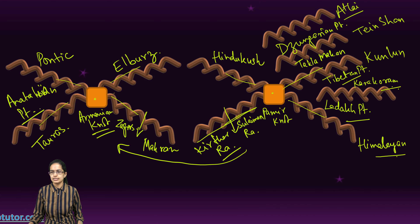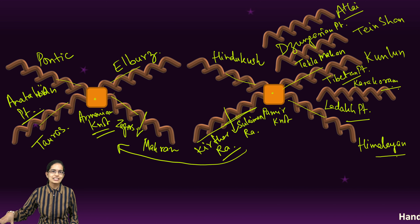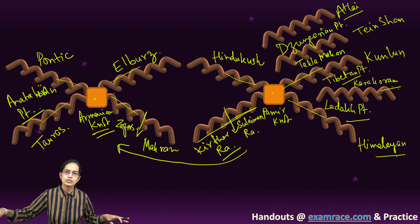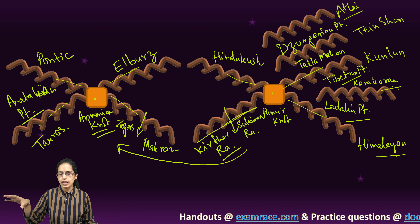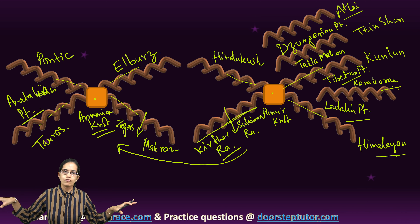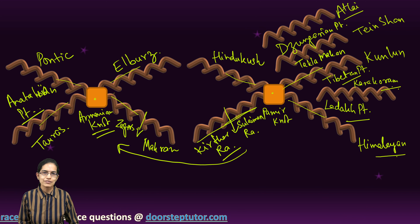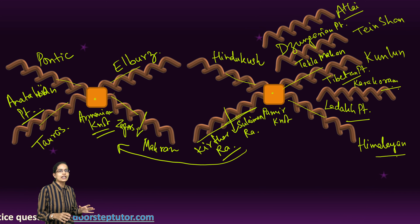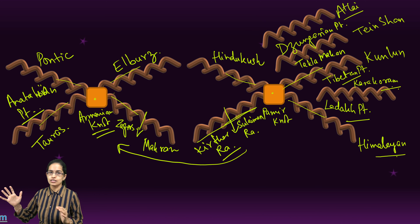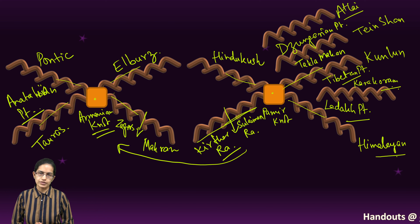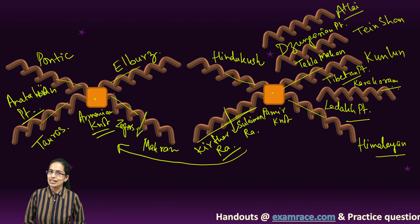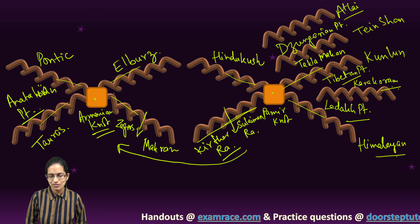So these are the major mountain ranges north of India. In continuation, you have two major knots — the Pamir knot and the Armenian knot — and the mountains originating from these regions are explained. This is a quick way to understand the major Himalayan mountain ranges and their continuation towards the west. We'll be continuing with many such interesting lectures in upcoming classes. Stay tuned and have a wonderful day ahead.